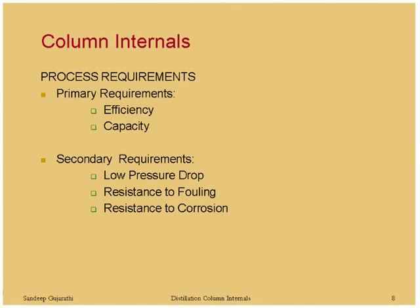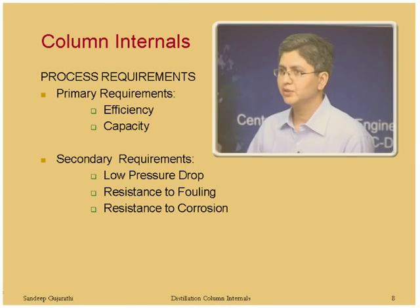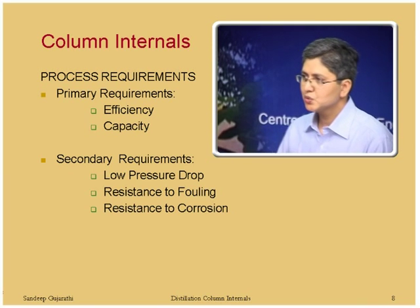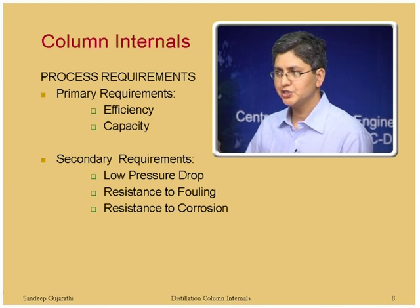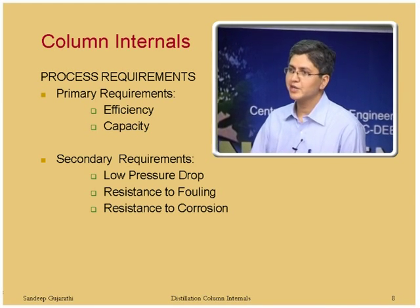Column internals have various process requirements. The primary requirements are to achieve the desired efficiency and to handle the desired capacities. What column internals do is allow vapor-liquid contact as intimate as possible to achieve good interaction for transfer of the light component from one phase to another in order to achieve the separation.